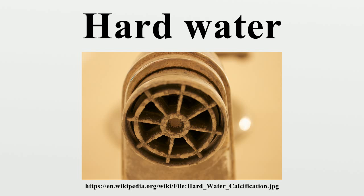In swimming pools, hard water is manifested by a turbid, or cloudy, appearance to the water. Calcium and magnesium hydroxides are both soluble in water. Aqueous solutions of these metal hydroxides absorb carbon dioxide from the air, forming the insoluble carbonates, giving rise to the turbidity. This often results from the pH being excessively high. A common solution to the problem is, while maintaining the chlorine concentration at the proper level, to lower the pH by the addition of hydrochloric acid, the optimum value being in the range of 7.2 to 7.6.